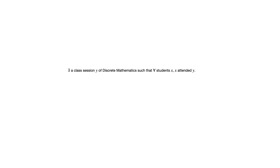This one says: there exists a class session Y of discrete mathematics such that for all students X, X attended Y. This is saying that there's a class session that everyone attended. I tried to emphasize in the previous example that it was not saying that — and this one is. We know that because it starts by saying 'there exists a class session,' so what follows describes what's going on with this class session. Again, it could be more than one, but for at least one class session, every student attended. There was a class session which was attended by all students.